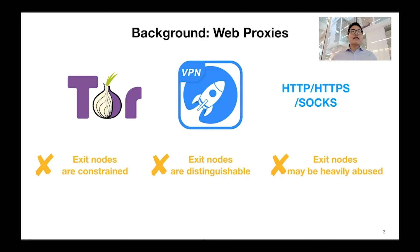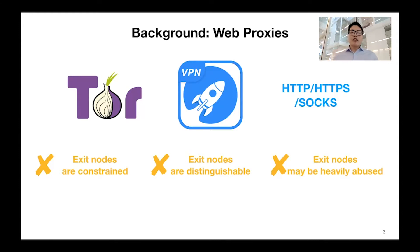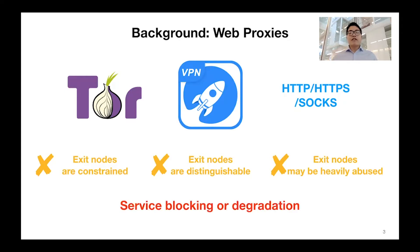Also, those access nodes are usually deployed in data center networks, which are distinguishable from common users' residential networks. Besides, those access nodes are usually commonly shared by a lot of users, and some can be heavily abused. All those kinds of limitations will make traffic relayed through those access nodes suffer from service blocking or degradation.